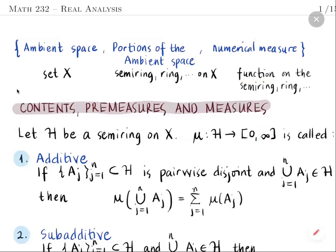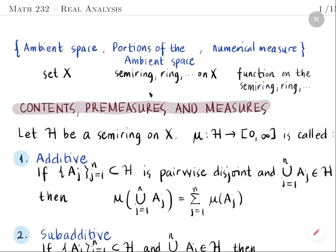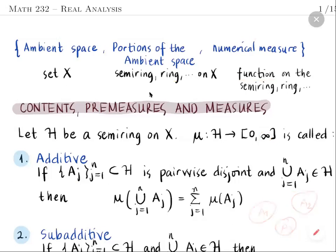First, mu is called additive. If you have a pairwise disjoint collection of sets A_j, j from 1 to N, whose union is also in H — we need this condition because a semi-ring is not closed under unions in general — then mu of the union must equal the sum of the function values. This coincides with intuition: counting the elements of the union of three disjoint sets equals the sum of their element counts.